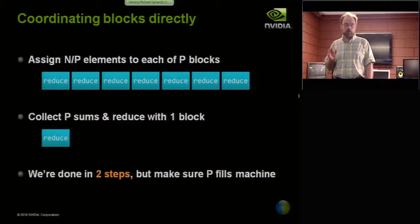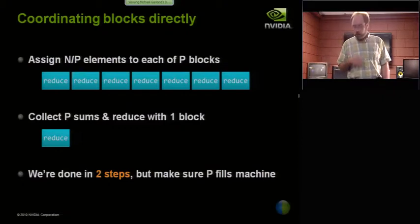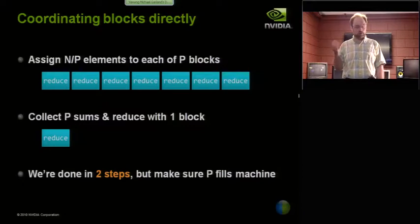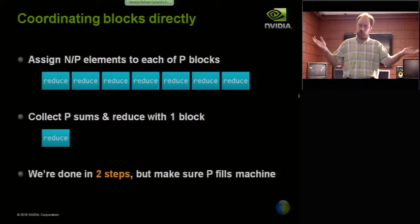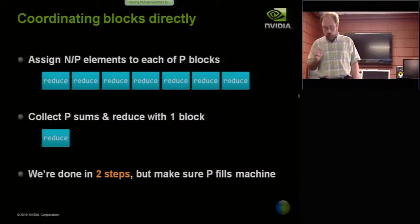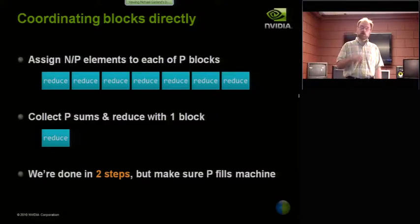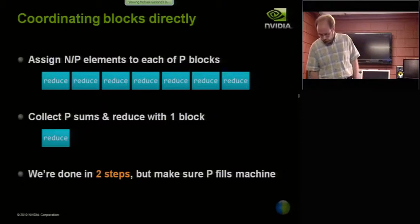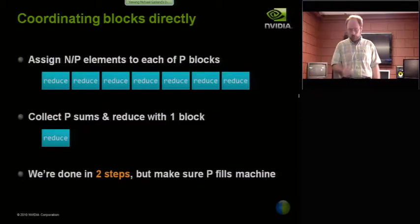And as long as I'm careful that I pick the number of blocks, which I'm calling P in this case, P for processor, as long as I pick P to be big enough that it's actually going to fill up the machine, so as long as I pick it to be, say, 400 or some reasonable size, this will actually outperform this tree-based log N coordination. And there's a couple reasons for that.